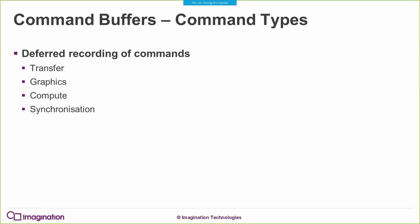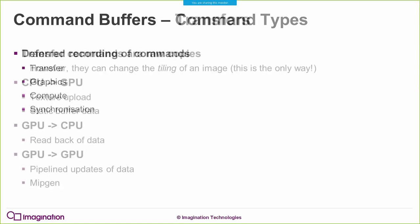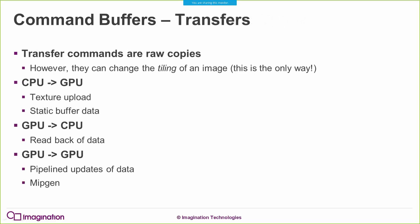Transfer commands are probably more interesting for this talk because if you come from an OpenGL or OpenGL ES background, a lot of the work that transfer operations do is hidden from you. Transfer commands are almost always raw copies - the exception being blit image, which does allow you to scale an image. But largely, transfer commands copy memory from one place to another. The special thing about transfer commands is they can change the tiling of an image.